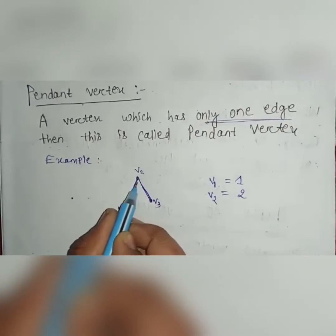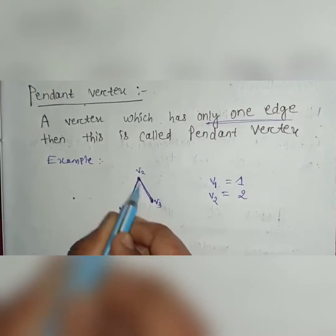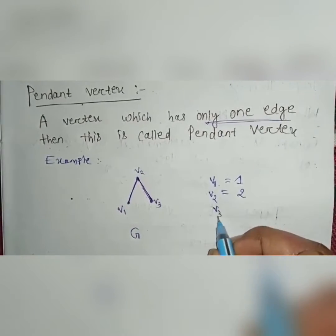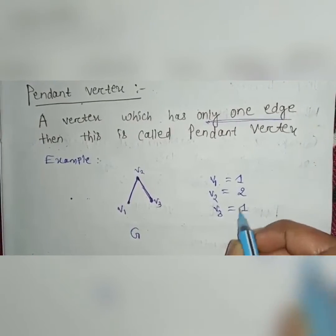V3 has only one edge. V3 connected to V2 only and this is the edge. So V3 has only one edge.